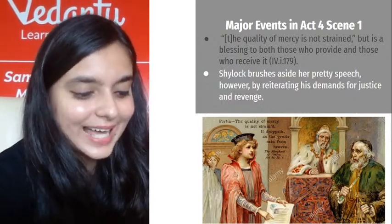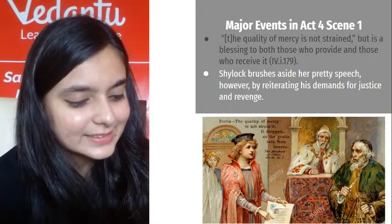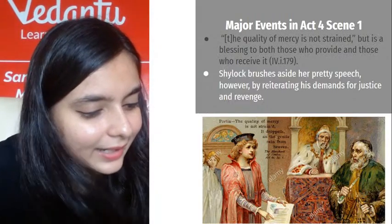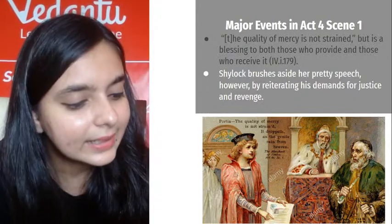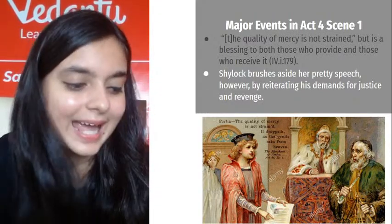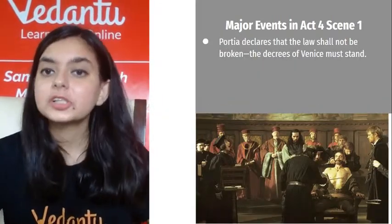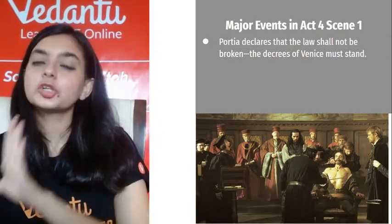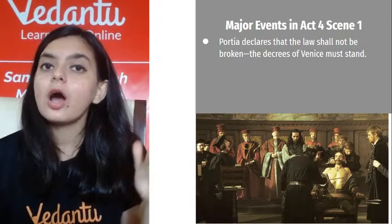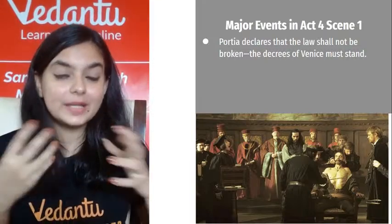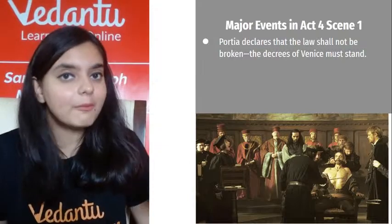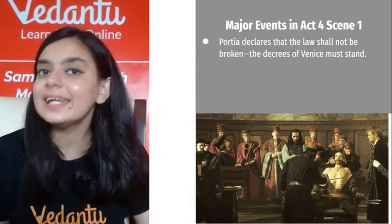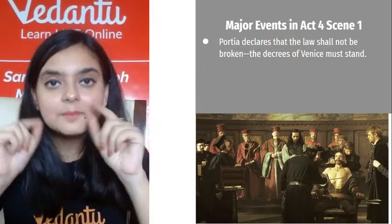Portia declares that the law shall not be broken and the decrees of Venice must stand. When Portia says the law cannot be amended, Shylock is very happy — he thinks Portia is on his side and his revenge will finally succeed. He says 'A Daniel has come to judgment' — this is a biblical reference.